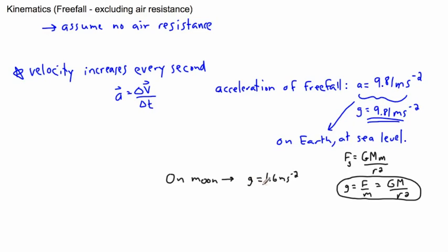That would be the acceleration of freefall on the moon. On Earth it's this value, on the moon it's this. Near another place - say you're near Jupiter - depending on what height you're at, you can calculate what g would be.